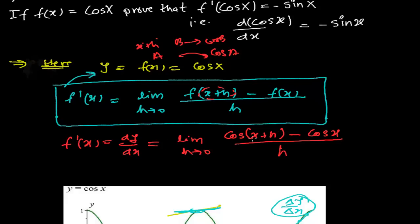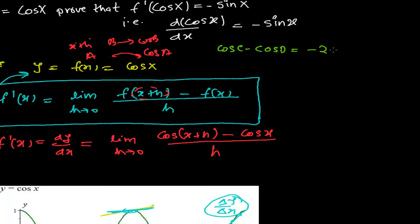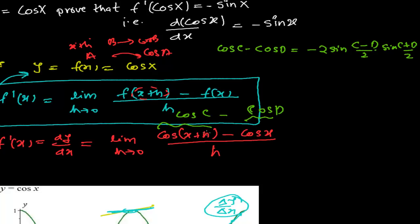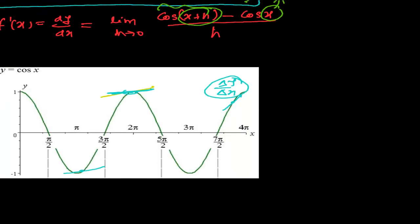Now how to solve this: cos(x+h) minus cos x, divided by h. We use the trigonometric identity we learned: cos C minus cos D equals minus 2 sin((C−D)/2) times sin((C+D)/2). This expression looks like the same form, where x+h is working as C and x is working as D. So we are going to apply this formula.